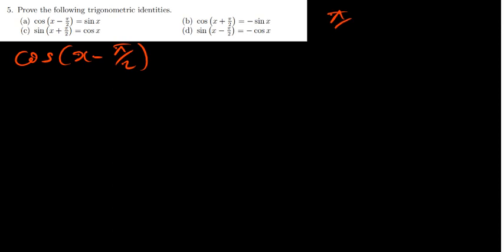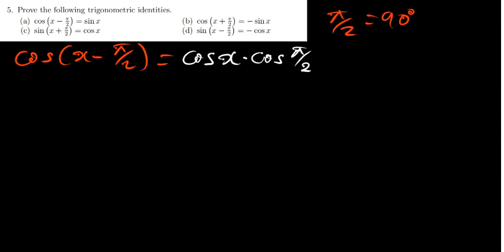Now that we have come up with these formulas, how can we apply them to solve a question? The question says: prove the following trigonometric identity — cos of (x minus pi over 2) equals sine x. We have cos x minus theta over 2, and we know that pi over 2 is 90 degrees. Using the cosine difference formula: cos x times cos 90 plus sine x times sine 90.